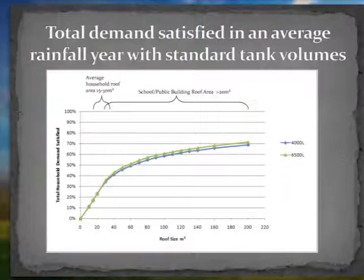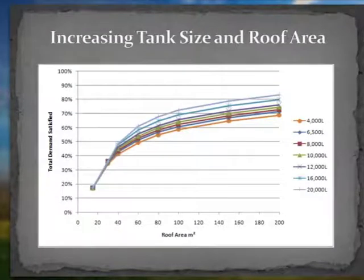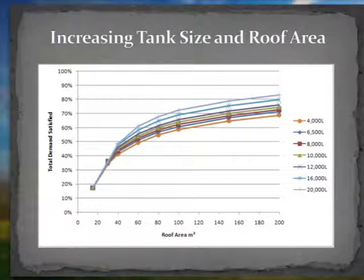This graph shows how much water is supplied when the tank size and roof area are increased. Increasing the tank size will not significantly improve the amount of water supplied compared to increasing the roof area. You can see on the graph that up to a roof area of around 30 metres squared, an increase in tank size has almost no effect on the amount of water supplied.